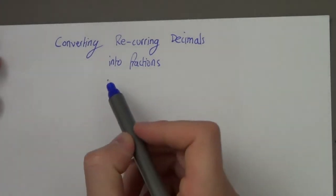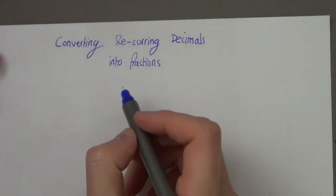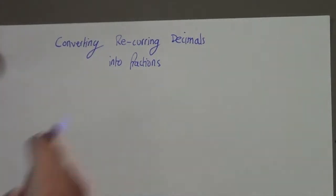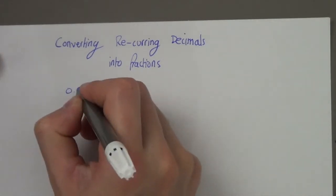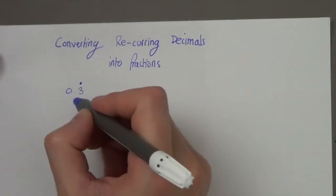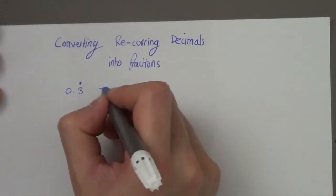So this lesson we're going to be converting recurring decimals into fractions. So what are recurring decimals? Well, they are decimals that have a number that gets repeated.